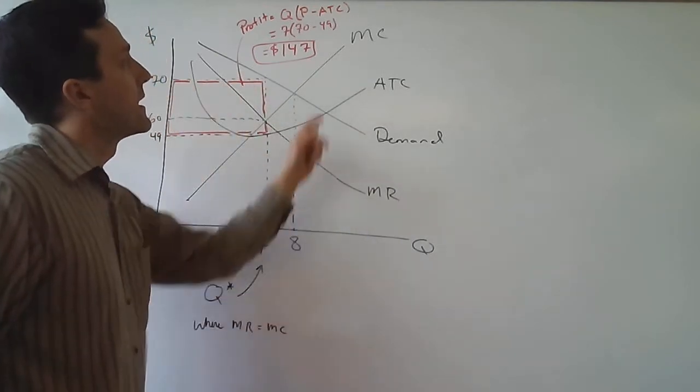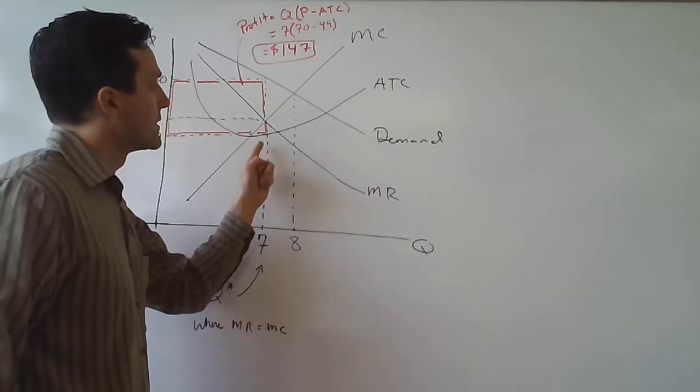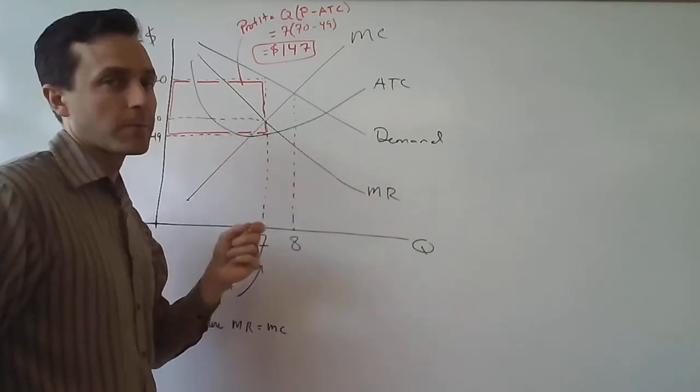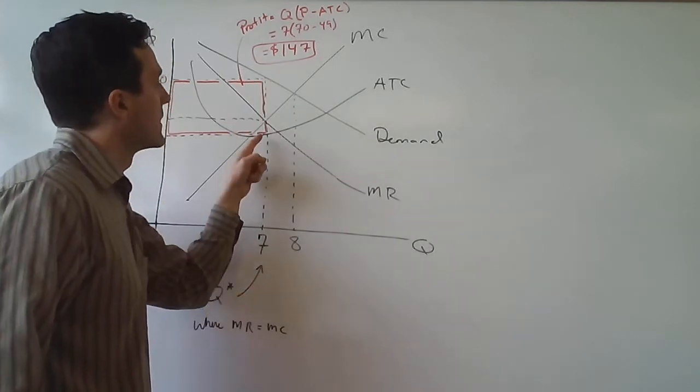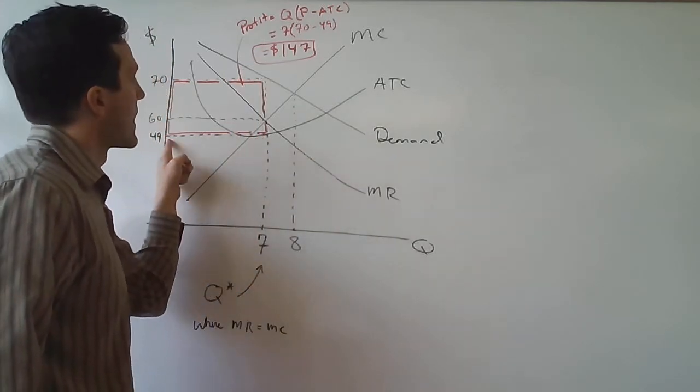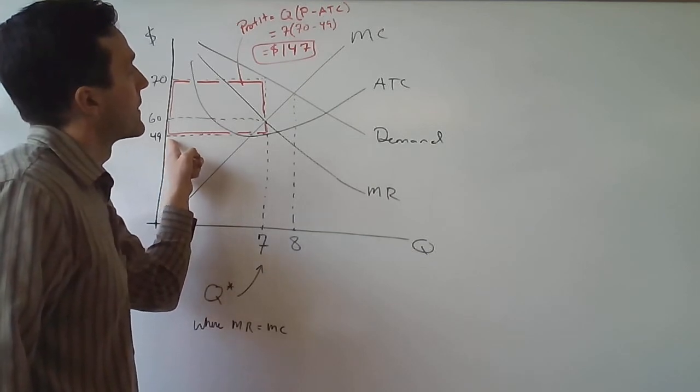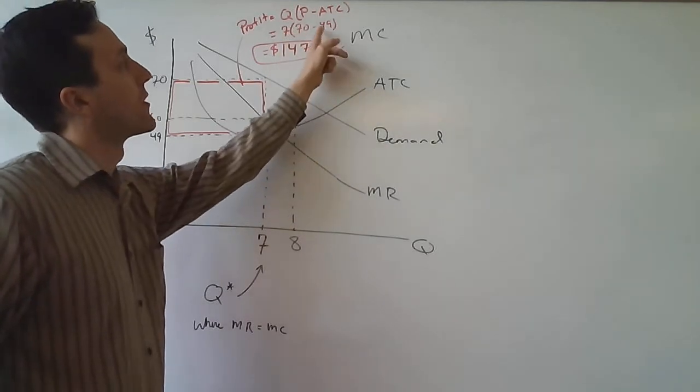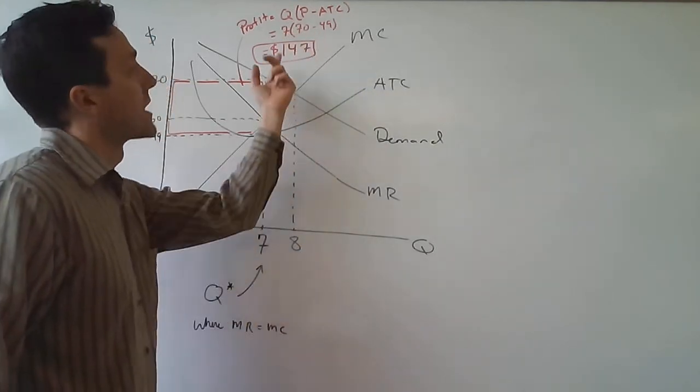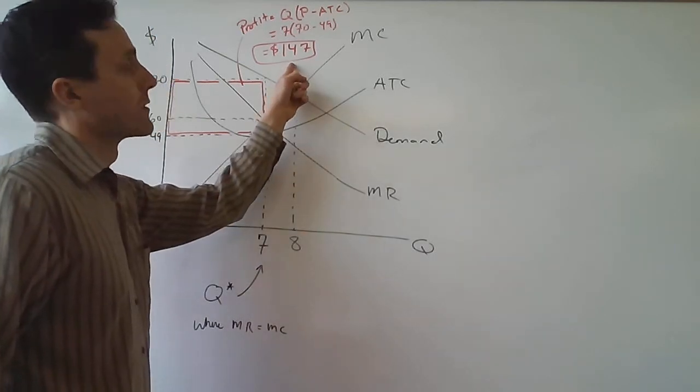We know the price will be 70. Average total cost, when we produce seven units... average total cost varies, so we need to find the particular value of average total cost at that quantity of seven. Average total cost is 49. And so profit is seven times $70 minus $49, which happens to be seven times $21, which is $147.